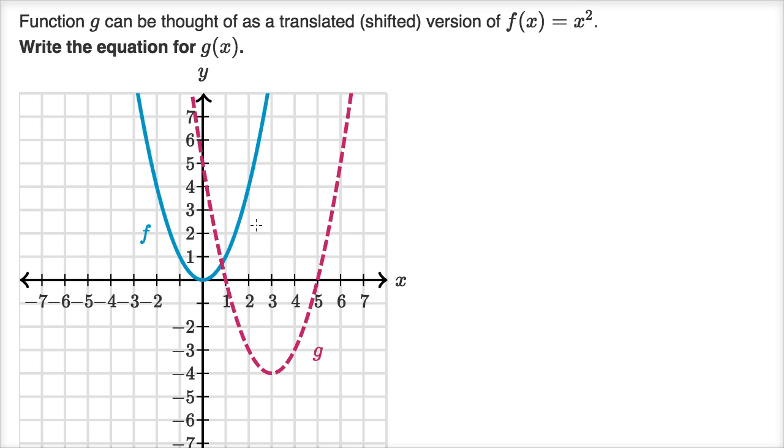All right, so whenever I think about shifting a function, and in this case we're shifting a parabola, I like to look for a distinctive point. And on a parabola, the vertex is going to be our most distinctive point.